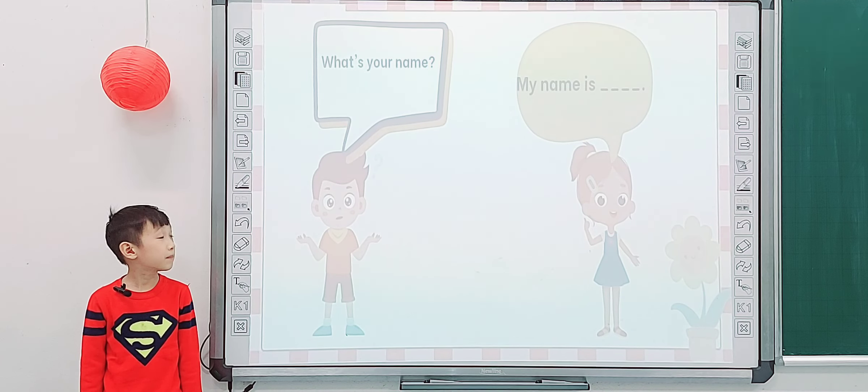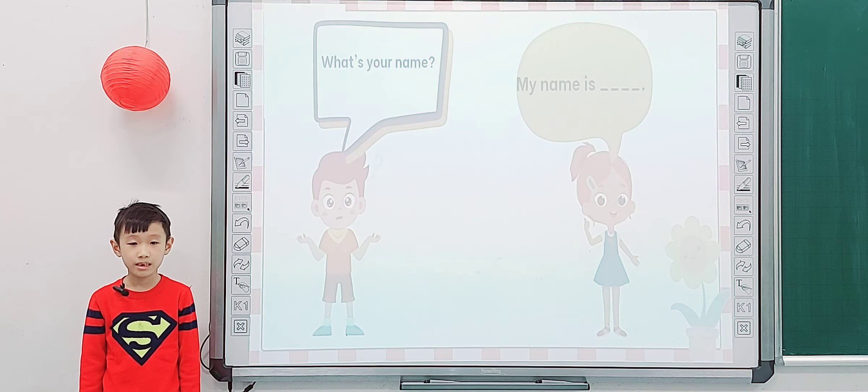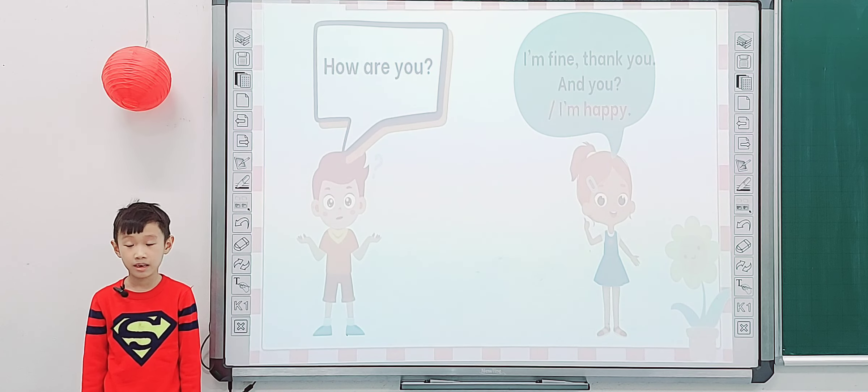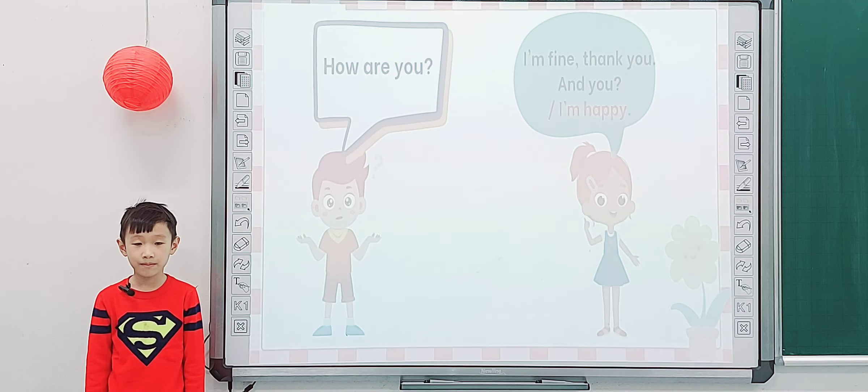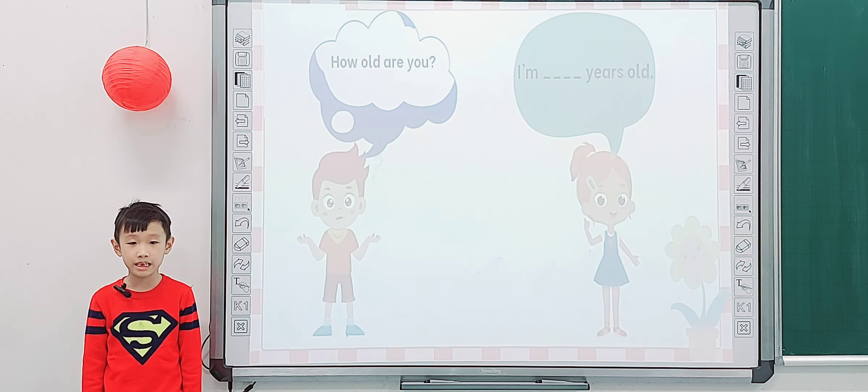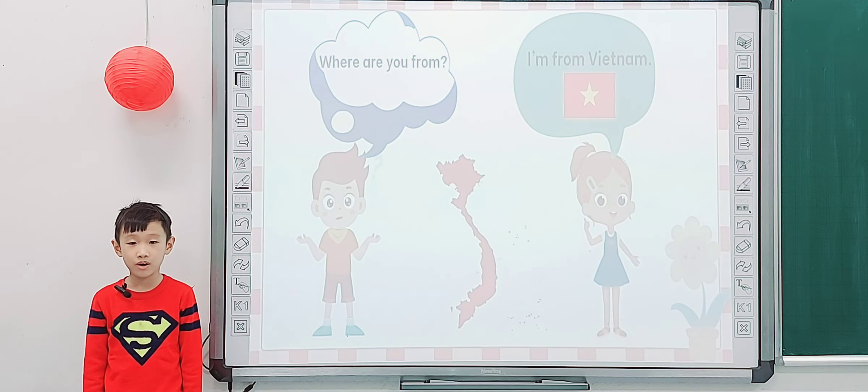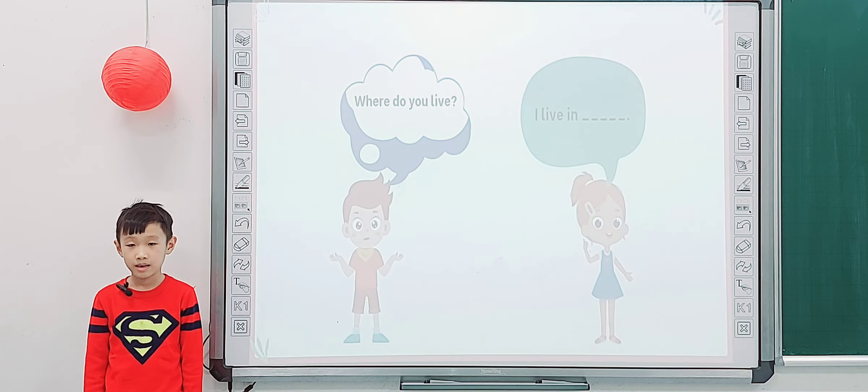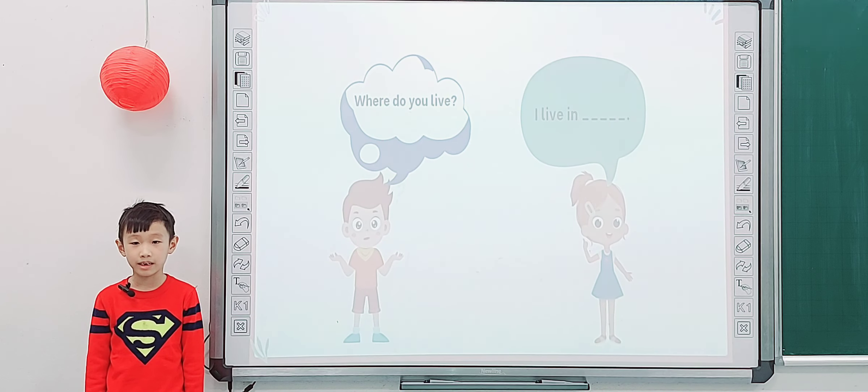Tell me what's your name? My name is P. How are you today? I'm happy. And tell me how old are you? I'm 6 years old. Where are you from? I'm from Vietnam. And where do you live? I live in.